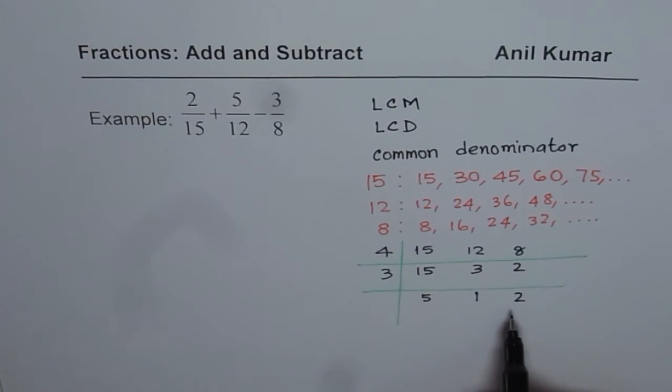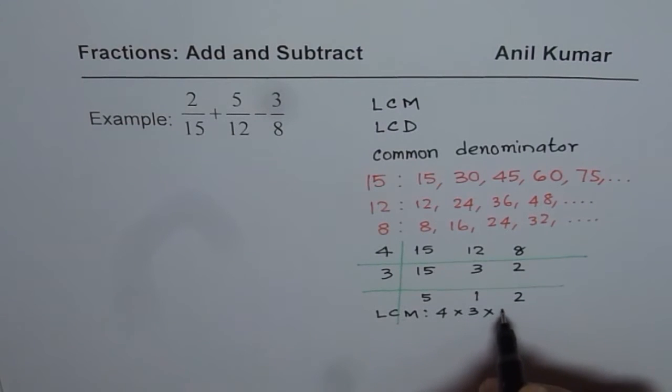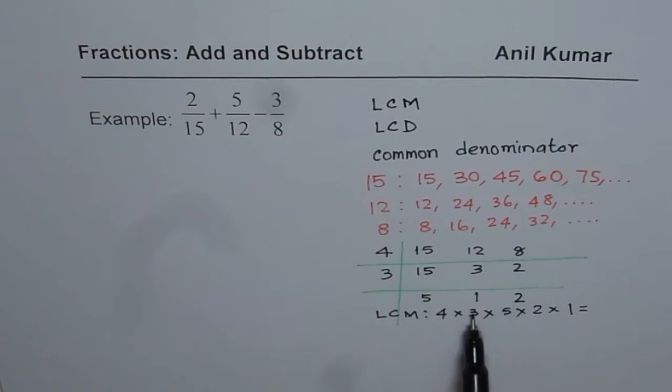Now, from here we can easily write down what is the LCM. So LCM in our case is 4 times 3 times 5 times 2 times 1. Now you can multiply these numbers to get LCM. 2 times 5 is 10, 4 times 3 is 12, 12 and 10 makes it 120.